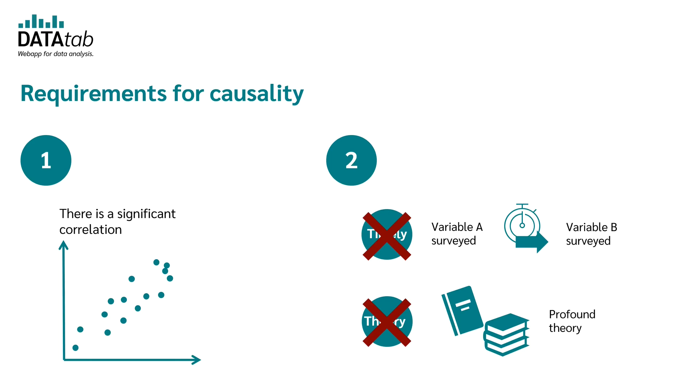If none of the two is true, e.g., there is neither a temporal order nor can the causality be justified by a well-founded theory, then we can only speak of a relationship but never of causality. For example, it cannot be said that variable E influences variable B or vice versa.